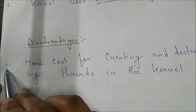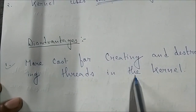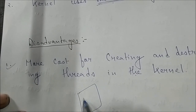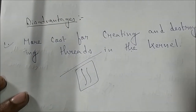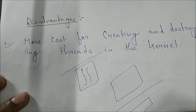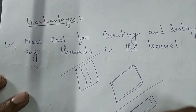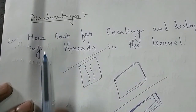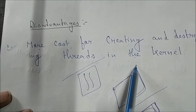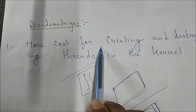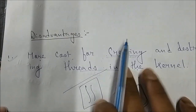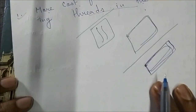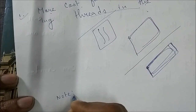The disadvantage of kernel level thread is: more cost for creating and destroying threads in the kernel. If you want to destroy a thread that is at kernel level, it costs more. You can distinguish user level from kernel level this way: user level thread always lies in the upper portion and kernel level thread always lies in the lower portion. More cost to create and destroy a thread in the kernel is a disadvantage of kernel level thread.